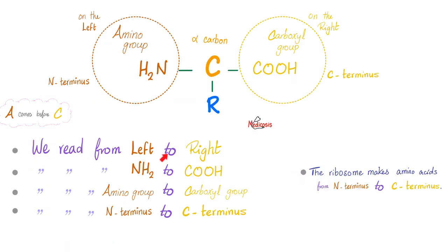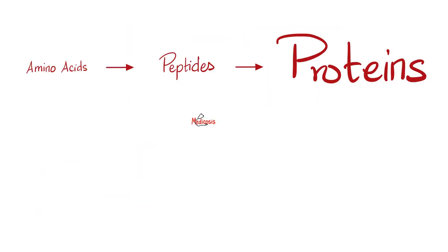In English, we read from left to right — same thing with amino acids. We read from the amino group towards the carboxyl group. Why do we care? Because this is the order of the amino acid coming out of the ribosome on the rough endoplasmic reticulum. The ribosome makes the N-terminus first before the C-terminus. That's why we care.